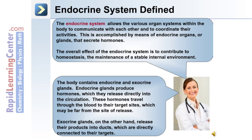The body contains both endocrine and exocrine glands. Endocrine glands produce hormones which they release directly into the blood circulation, and these hormones travel through the blood to their target sites. Exocrine glands, on the other hand, release their products into ducts, which are directly connected to their targets.